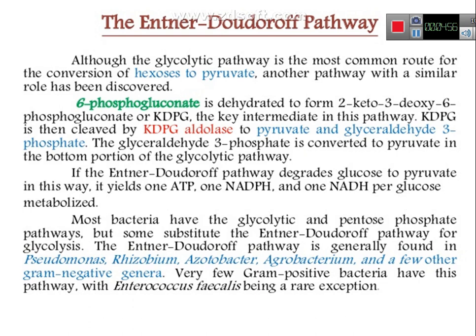The ED pathway is generally found in Pseudomonas, Rhizobium, Azotobacter, Agrobacterium, and a few other gram-negative bacteria. Mostly these microorganisms are gram-negative bacteria, though very few gram-positive bacteria also have this pathway. For example, Enterococcus faecalis is a rare exception.